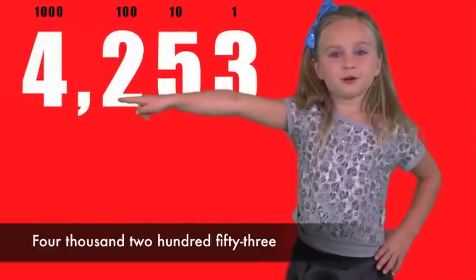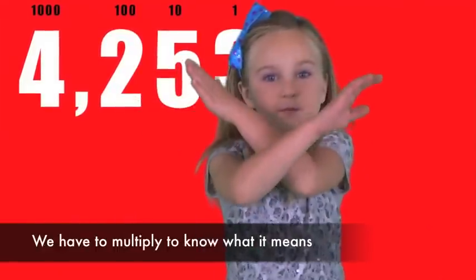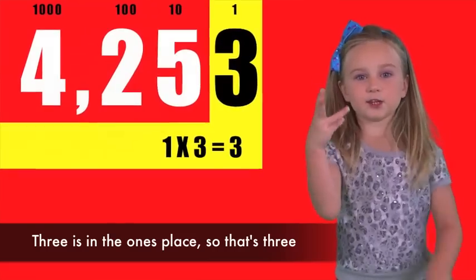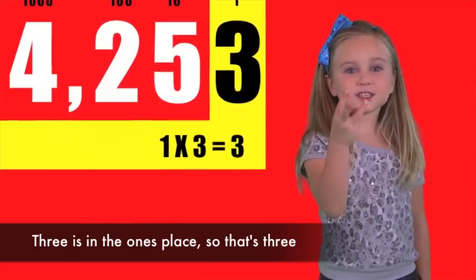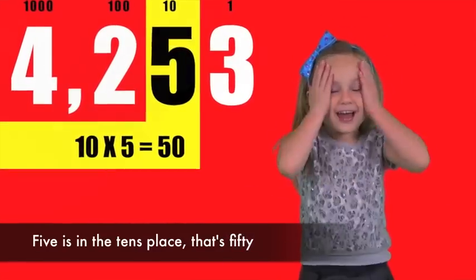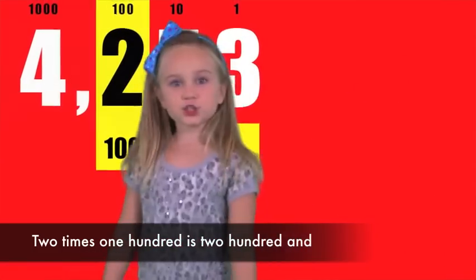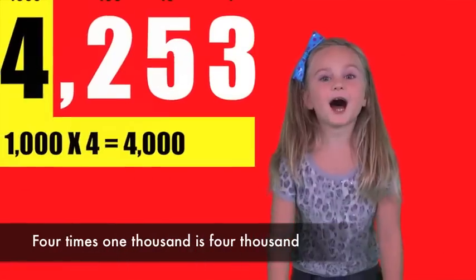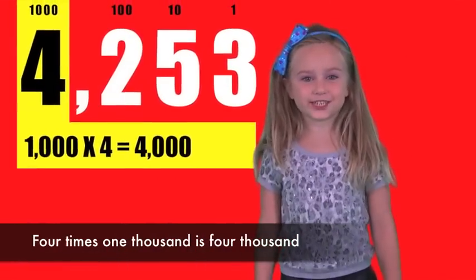4,253. We have to multiply to know what it means. 3 is in the ones place, so that's 3. 5 is in the tens place, that's 50. 2 times 100 is 200 and 4 times 1000 is 4000.